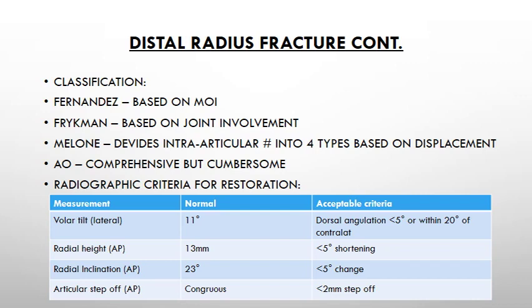For radial height, they assess any shortening produced by the fracture. Normal is 13 millimeters; if there's shortening of less than five millimeters that is acceptable, but if more than five they will perform operative intervention. Radial inclination is also measured, and for articular step-off they use the AP view — less than two millimeters is acceptable, but more than two millimeters requires restoring the fracture to its most anatomical position to avoid post-traumatic osteoarthritis.